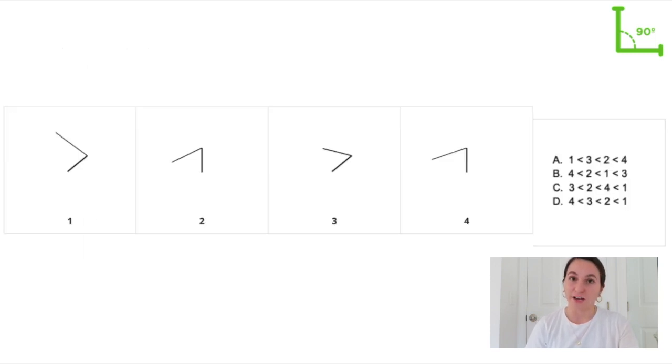So let's apply all these strategies to an example. So let's start with my approach first and look straight to the answer choices to find either the largest or smallest angle. So looking right away at the answer choices we can see that the largest angle is either 4, 3, or 1. So let's look at those angles first to see if we can tell which one is the largest.